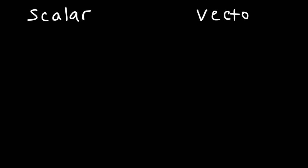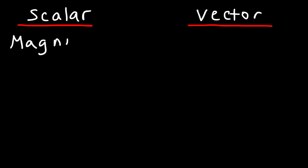In this video, we're going to talk about vectors. But what is a vector, really? Let's distinguish it from something called a scalar quantity. What's the difference between a vector quantity and a scalar quantity? A scalar quantity only has magnitude, while a vector quantity has both a magnitude and a direction.